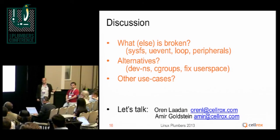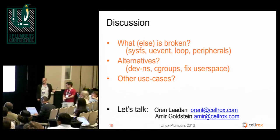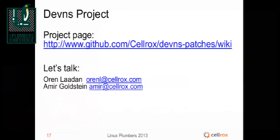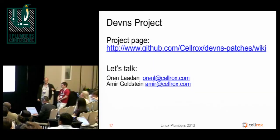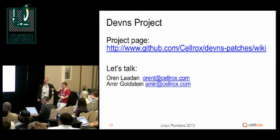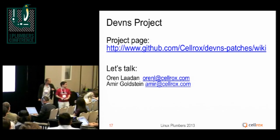I want to make something clear. We published our patches about two weeks ago. What we actually propose is the framework where it's easy for a device driver writer to make its device namespace-aware. We've used this framework to make the framebuffer, input event drivers, and network device namespace-aware. To be clear, the only devices that need to be namespace-aware are the ones you want to share resources between containers.